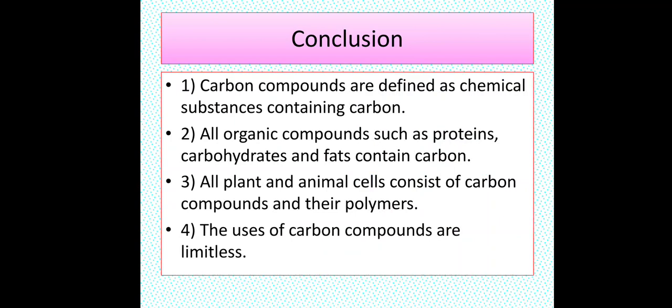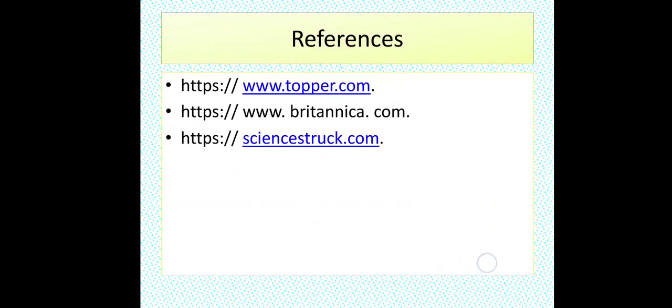In this way the conclusion of our activity: 1. Carbon compounds are defined as chemical substances containing carbon. 2. All organic compounds such as proteins, carbohydrates and fats contain carbon. 3. All plant and animal cells consist of carbon compounds and their polymers. 4. The uses of carbon compounds are limitless. 5. And this one is the references with which we studied all information about our activity.